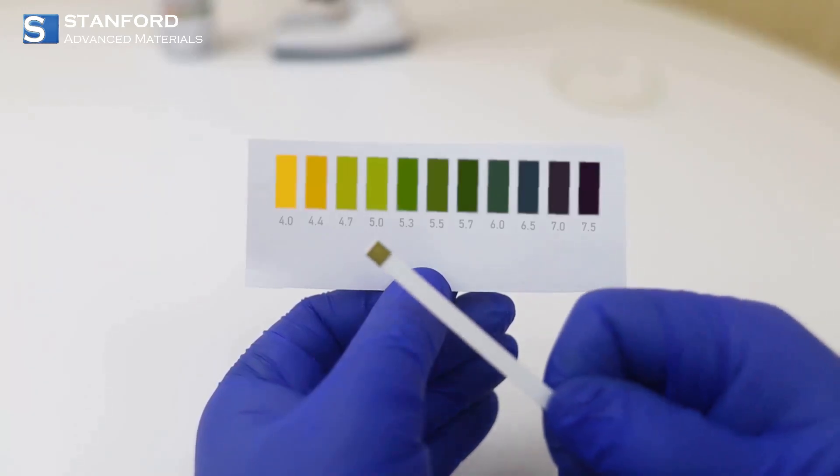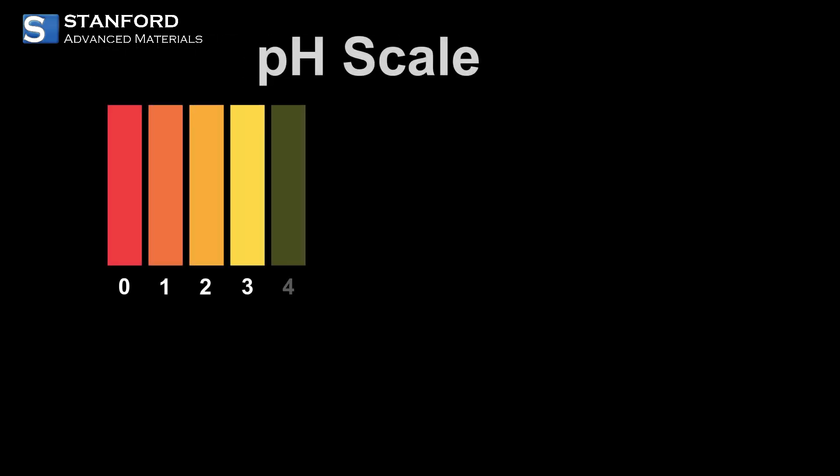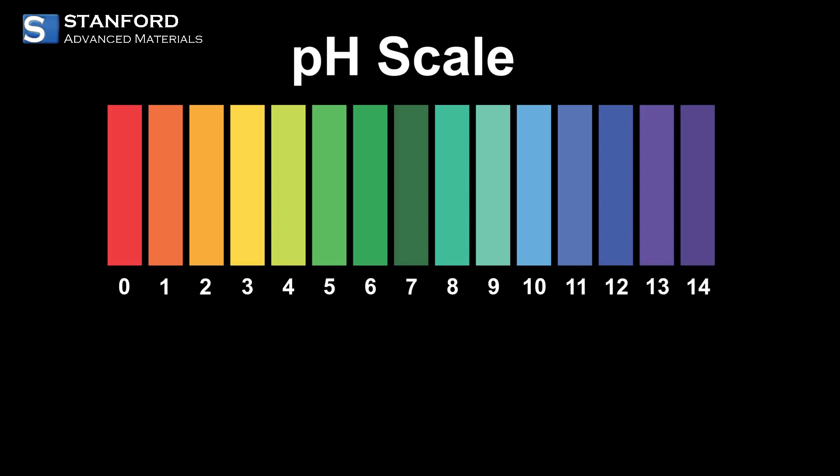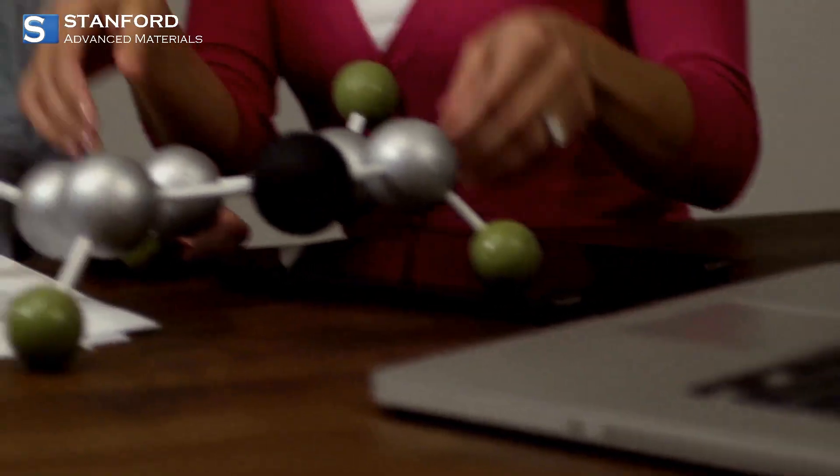What is the pH scale and why does it matter? From battery acid to baking soda, every substance around us falls somewhere between 0 and 14 on the pH scale. Let's break it down fast. pH stands for potential of hydrogen.